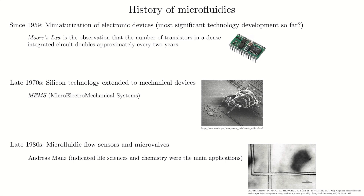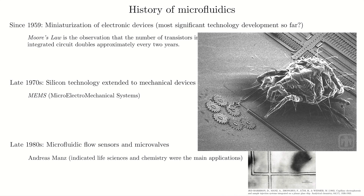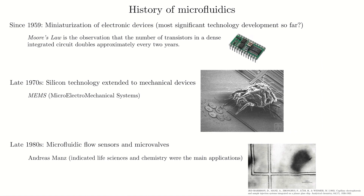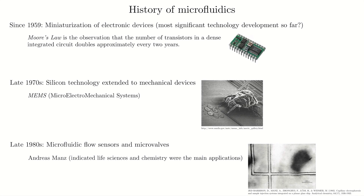Springboarding off that, in roughly the late 1970s, silicon technology was extended to mechanical devices — a field known as MEMS, which stands for Micro Electromechanical Systems. They started making really cool, very small silicon mechanical devices. I've shown a picture from Sandia Labs where they made tiny gears, with a mite shown for scale. In the MEMS area, they extended what they were doing with electronic devices into the mechanical space, making neat sensors and other devices.